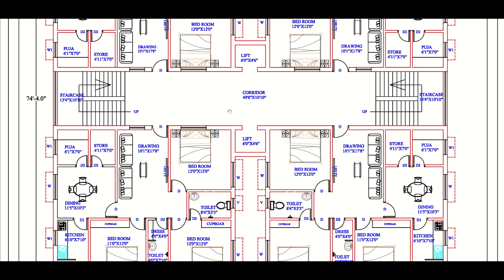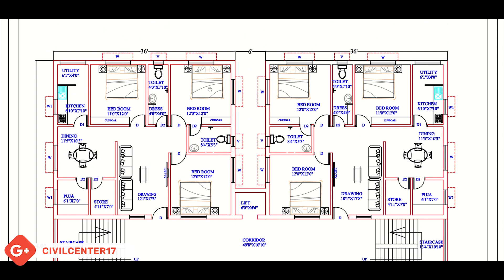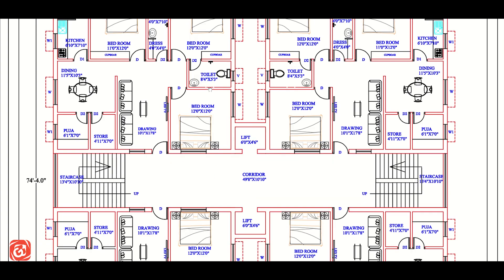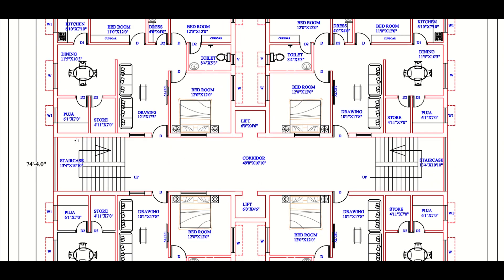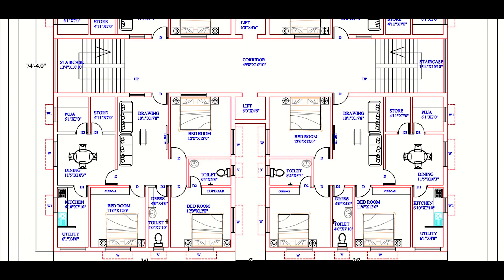First of all, as you can see, we have the plan of an apartment here. It has four units — one, two, three, and four. It has two staircases: one staircase is present at this portion and another staircase is present in this portion. We also have two lifts — one here and one here. These are the open portions.